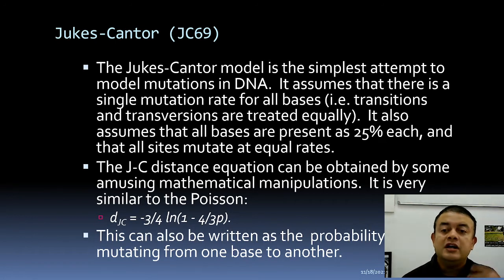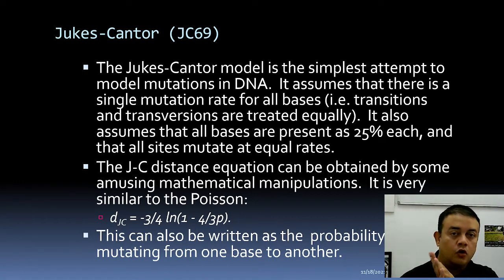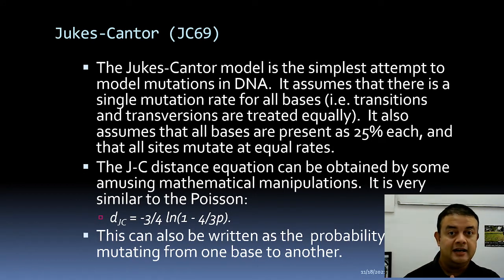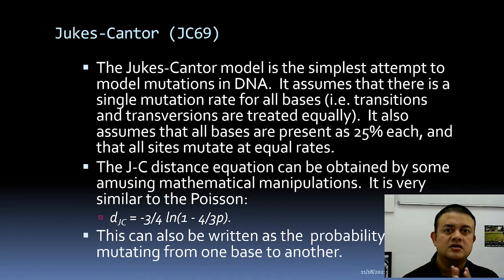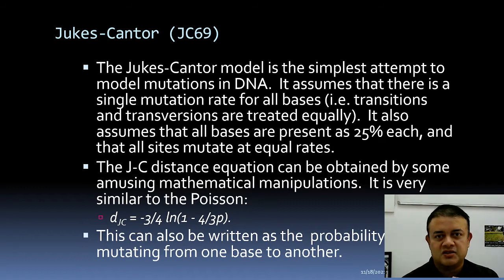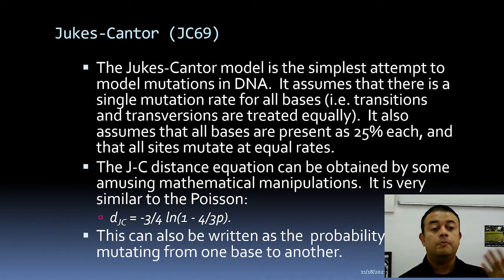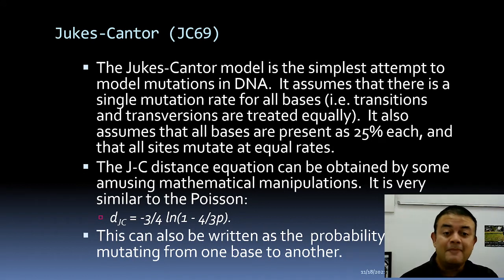JC69 also assumes that all bases are present at 25% each — adenine, cytosine, guanine, and thymine each at 25% — and that all sites mutate at equal rates. It is a highly constrained model with very few parameters and zero degree of freedom, which is why it is so simple.